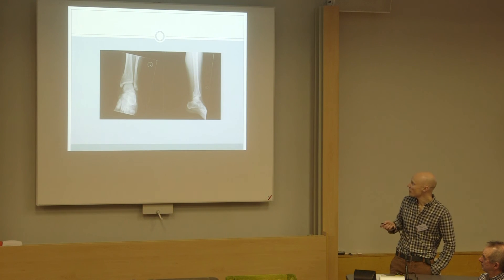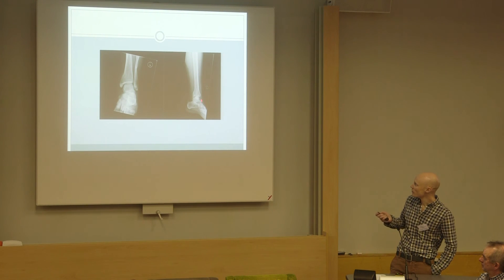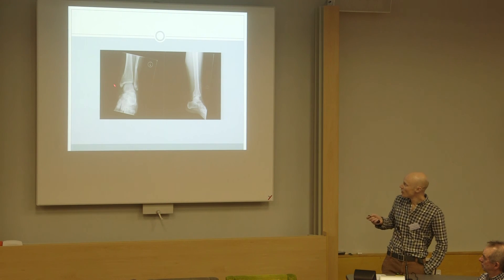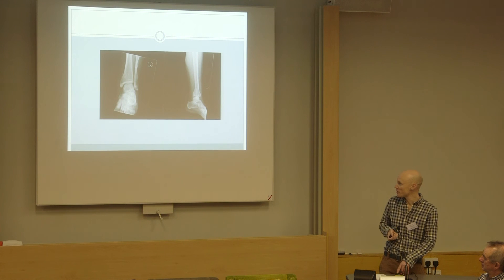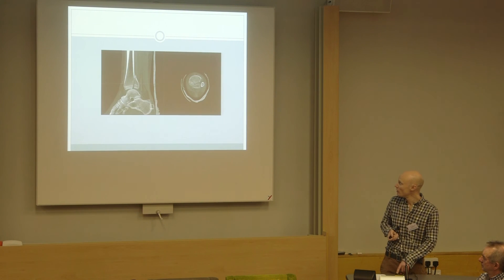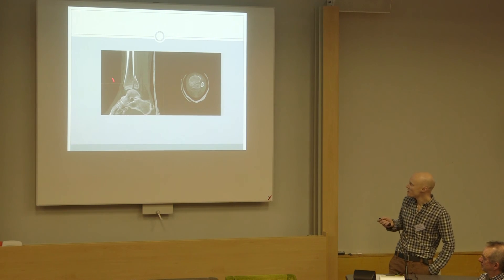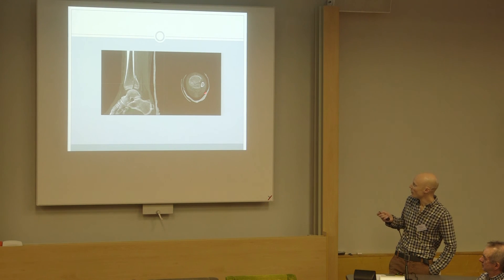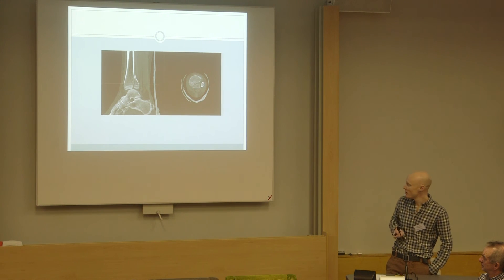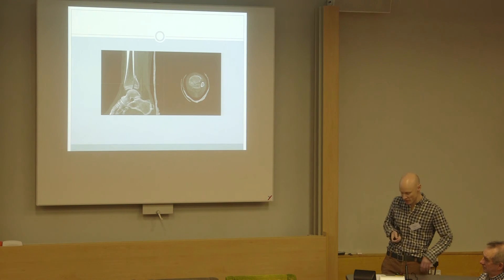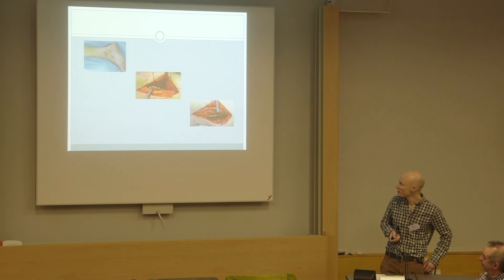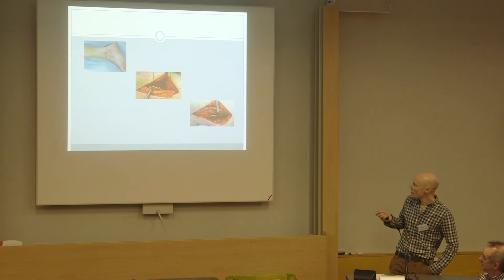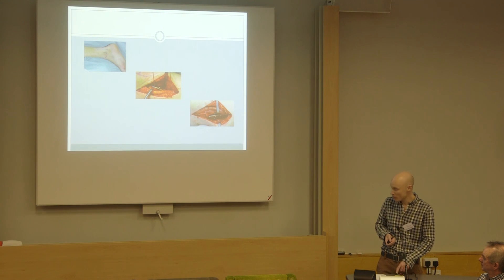Here's an example: an unstable ankle with a posteromedial fragment. On the medial side, we've got the double shadow described by Waver, which tells us something bad is happening at the back of the ankle. CT suggests a small incarcerated fragment, and we've got a posteromedial type involving the deltoid with two distinct fragments. In this patient, we decided to go posteromedially. The patient goes prone, we performed an approach around the neurovascular bundle, and we can buttress those two fragments separately. That's the result.